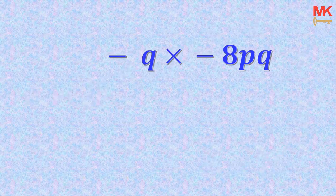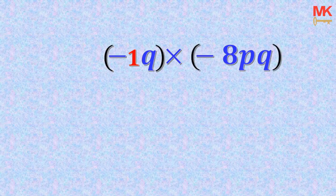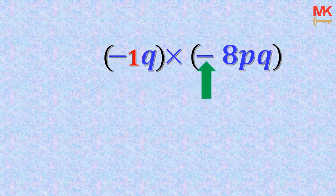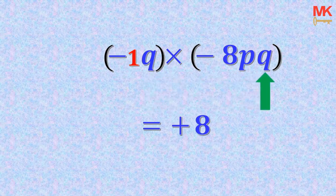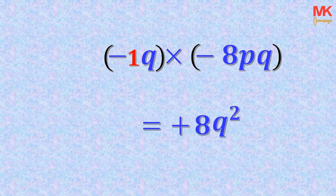Now we group the first term and the second term and follow the same rules: operations multiply operations, numbers multiply numbers, and the same letters multiply the same letters. The negative operation in the first term multiplies the negative operation in the second term — that's a positive operation. The number 1 multiplies 8, giving 8. The variable Q in the first term multiplies Q in the second term, giving Q to the second power. There is no P in the first term, so we just carry P into the result.